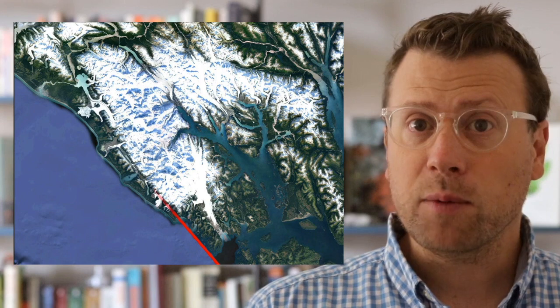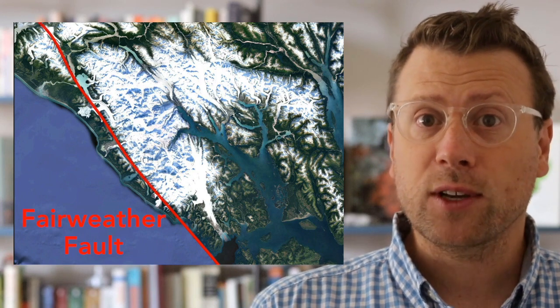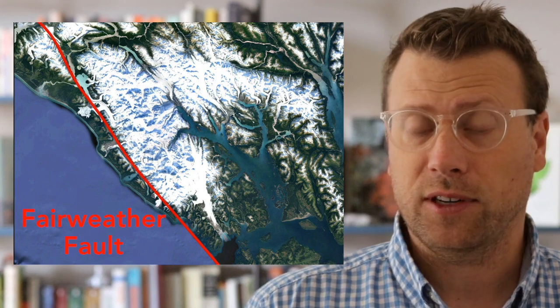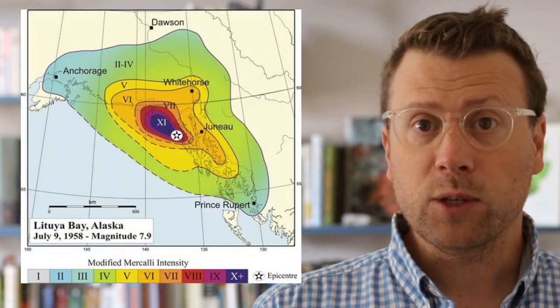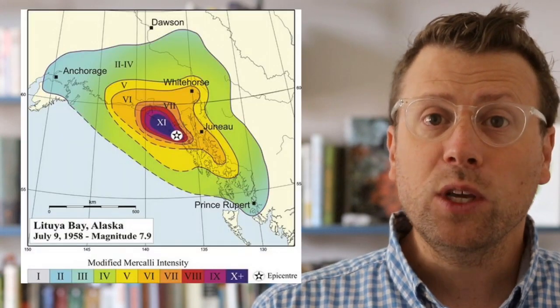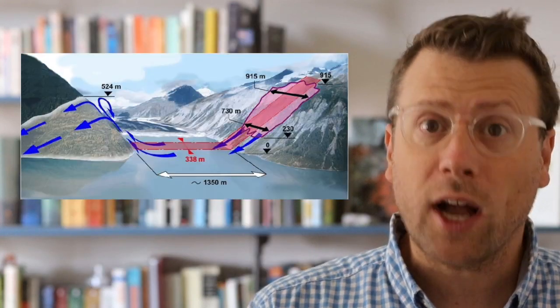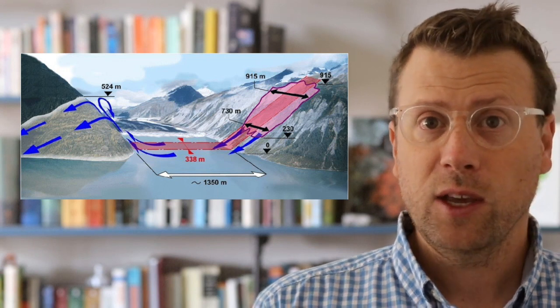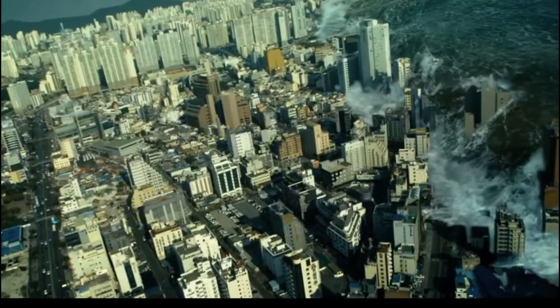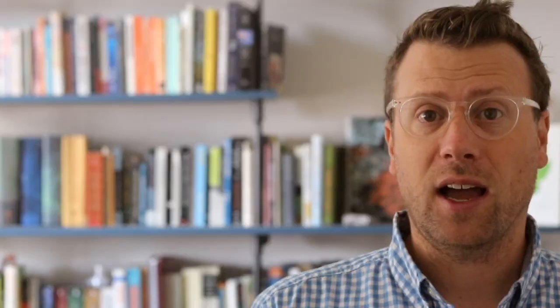The Fairweather Fault occupies a narrow valley near the Pacific coastline and is an active fault. The last really large earthquake in the area was the magnitude 7.8 Lituya Bay earthquake in 1958. This earthquake caused a huge rock slide to fall into Lituya Bay, which generated a mega tsunami up to 1,700 feet high that wiped out everything along the edge of the bay — the biggest tsunami ever recorded in modern times.